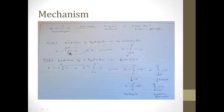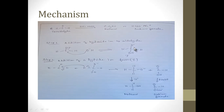Step one: addition of hydroxide ion to the aldehyde. From the base we get the hydroxide ion, which attacks the carbonyl carbon. Due to the high electronegativity of oxygen, it pulls the bonding electrons towards itself, giving the carbon a partial positive charge. The OH⁻ (negative center) attacks the partial positive carbon, forming a bond and giving oxygen a negative charge, forming the alkoxide ion intermediate.